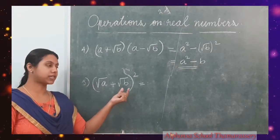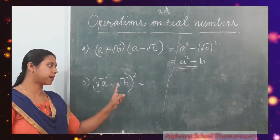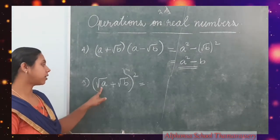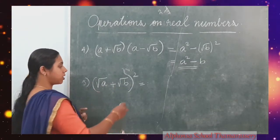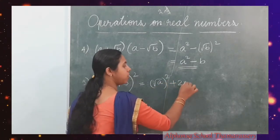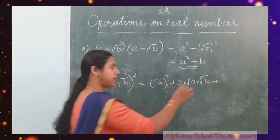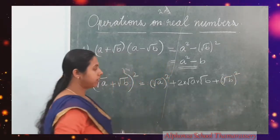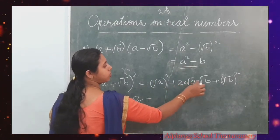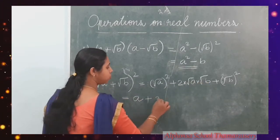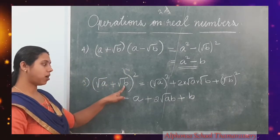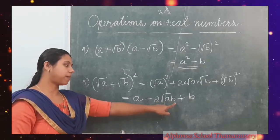The next identity is root A plus root B all square, which is in the form of A plus B all square. We know A plus B all square equals A square plus 2AB plus B square. Here A is root A and B is root B. So root A all square plus 2 into root A into root B plus root B all square equals A plus 2 root AB plus B. So root A plus root B all square equals A plus 2 root AB plus B.